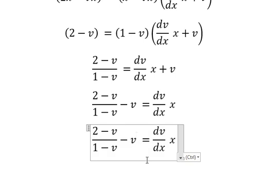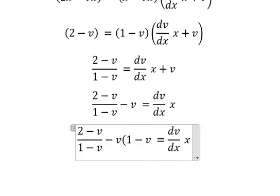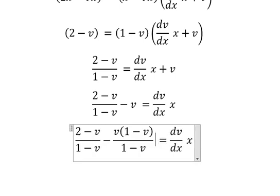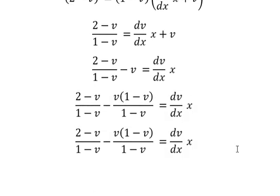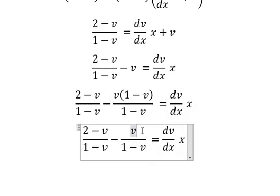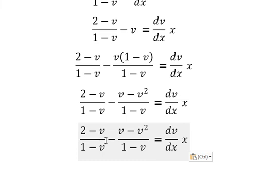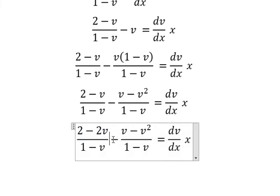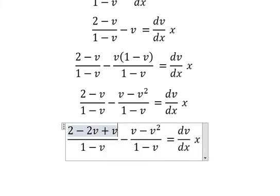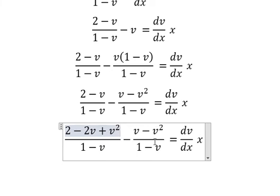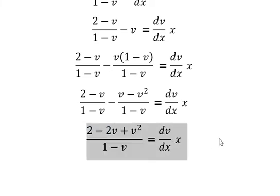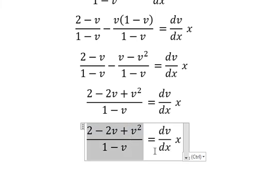Next we can do common denominator. So this one we have v minus v square. Negative v negative v, we have negative 2v. This one we have positive v square. So this one I will put on the right. dx and x we put on the left.